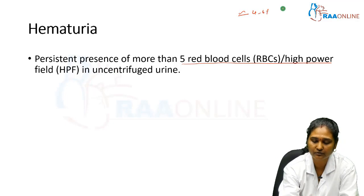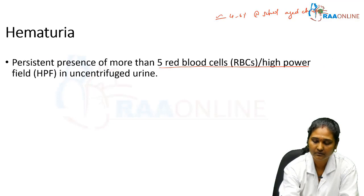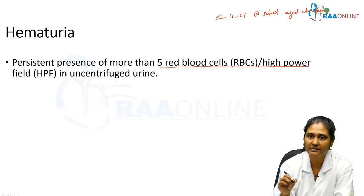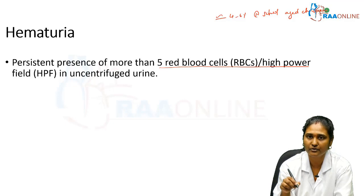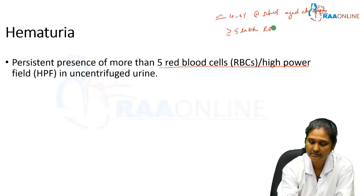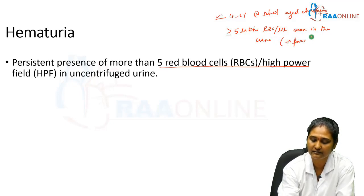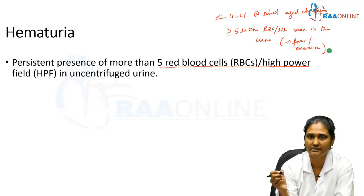Approximately 4 to 6 percent of normal school-aged children will have more than 5 RBCs per high power field in an uncentrifuged urine sample. Nelson also states that in a normal child, it is normal to see more than 5 lakh RBCs per microliter in the urine sample.